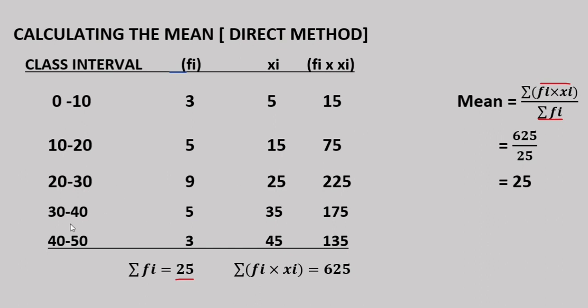Then 30 plus 40 is 70, divided by 2 is 35. Then 40 plus 50 is 90, divided by 2 is 45. So the xi values are: 5, 15, 25, 35, 45.